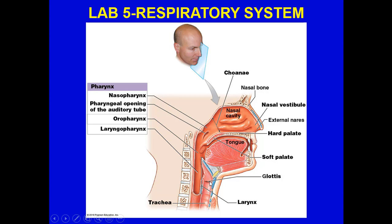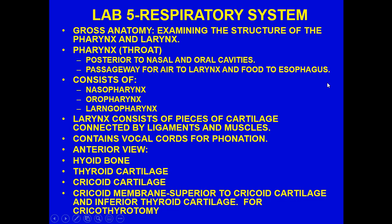When examining the pharynx and larynx, the pharynx — or throat — is posterior to the nasal and oral cavities and serves as a passageway for air to the larynx and food to the esophagus. It has three sections: nasopharynx, oropharynx, and laryngopharynx. The larynx consists of pieces of cartilage connected by ligaments and muscles, and contains the vocal cords for phonation. In an anterior view, we see the hyoid bone — unique in that it is not attached to any other bone — along with the thyroid and cricoid cartilages.